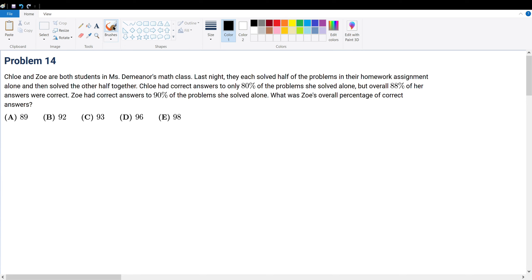Problem 14: Chloe and Zoe are both students in Ms. Demeanor's math class. Last night they each solved half the problems in the homework assignment alone and the other half together. Chloe had the correct answer on 80% of the questions she solved alone, but overall 88% of her answers were correct. Zoe had correctness on 90% of the questions she solved alone. What was Zoe's overall percentage of correct answers?